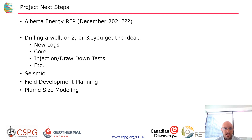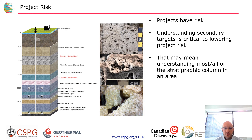Next steps: the Alberta Energy RFP was in December 2021. We know we'll need to drill wells, acquire new logs and core, run injection and drawdown tests, conduct seismic, and complete plume size modeling — and we need to arrive at that relatively soon. The big risk is that any one of these mapped aquifers may not be continuous, may not support the injection volumes required, or may lack the permeability and flow capacity needed. Understanding more of the stratigraphic column and having secondary targets with a plan to assess them throughout the project life is very important.